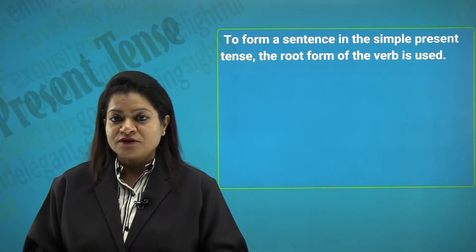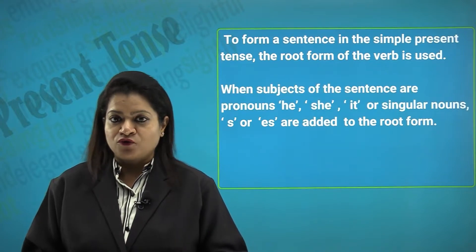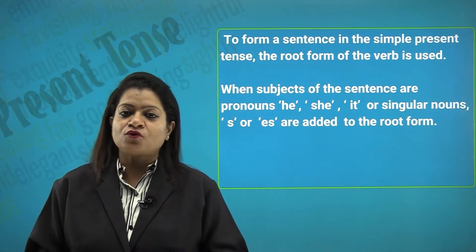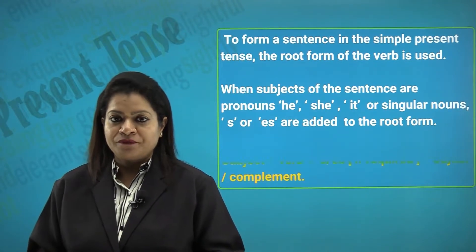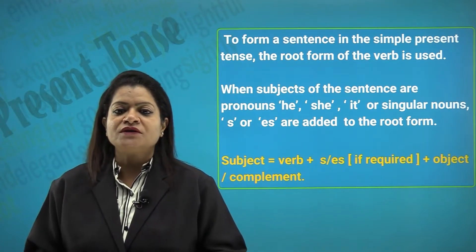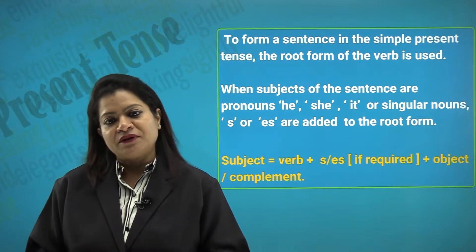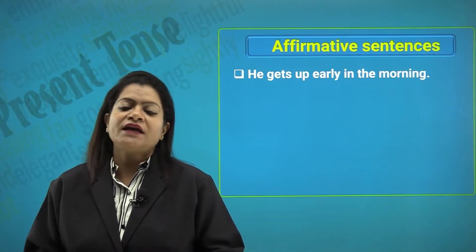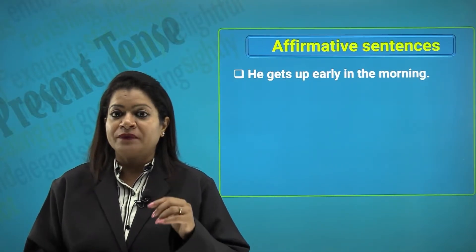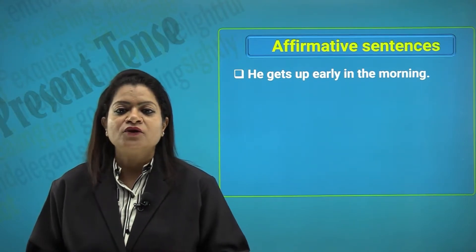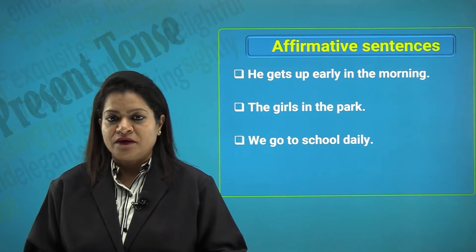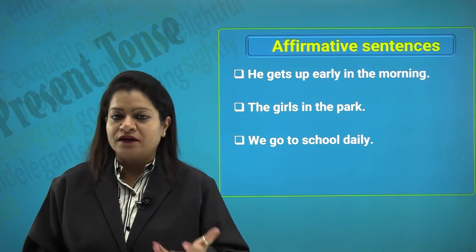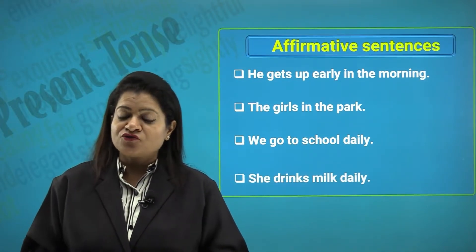To form a sentence in the simple present tense, the root form of the verb is used. When the subject is a pronoun like he, she, it, or a singular noun, we add 's' or 'es' to the root form. The structure is: subject + verb(+s/es) + object or complement. For affirmative sentences: 'He gets up early in the morning,' 'The girl is in the park,' 'We go to school daily' — 'we' is plural so the verb 'go' has no 's' or 'es.' 'She drinks milk daily.'